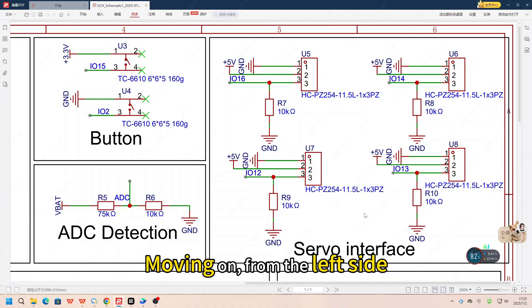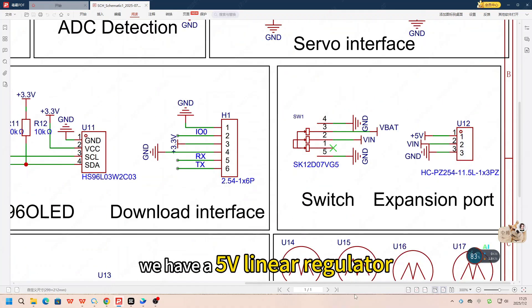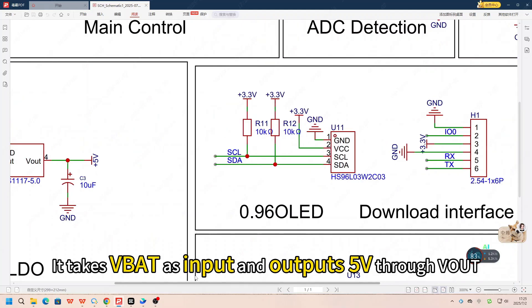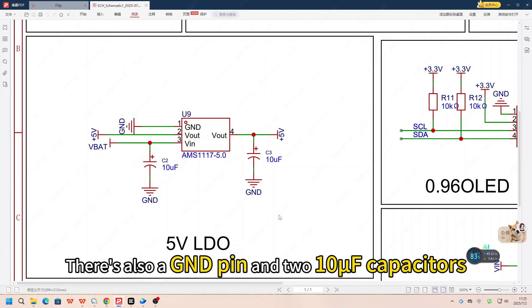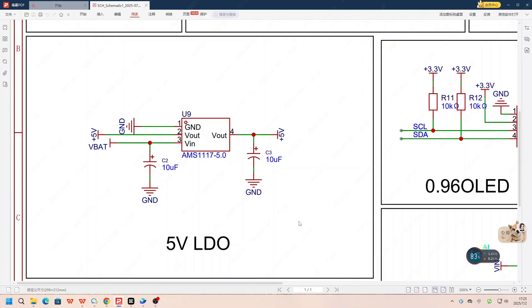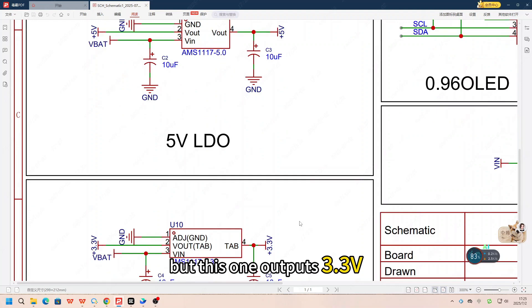Moving on, from the left side, we have a 5V linear regulator. It takes VBAT as input and outputs 5V through VOUT. There's also a GND pin and two 10uF capacitors. Below that is another LDO regulator, but this one outputs 3.3V.